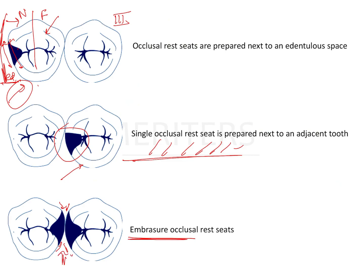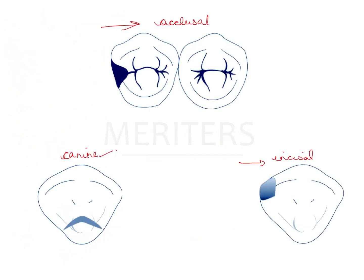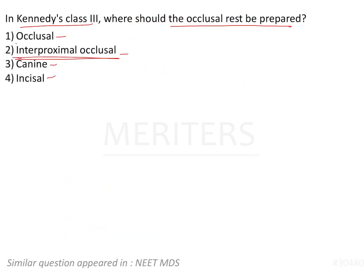The two answers we could narrow it down to would be occlusal and interproximal occlusal. But since we are talking specific to Kennedy's class 3, the answer is interproximal occlusal — that is option number 2.